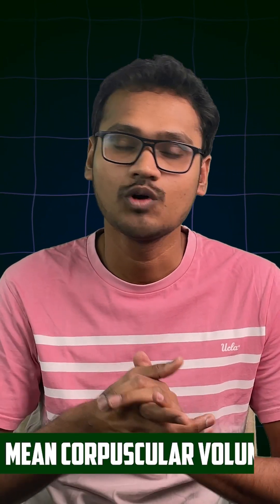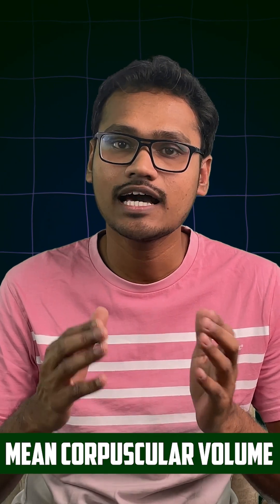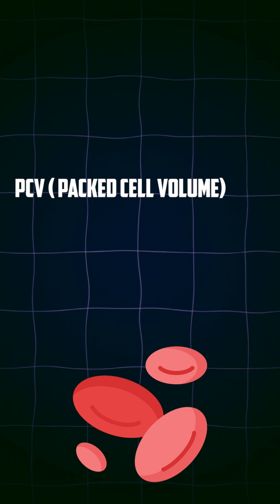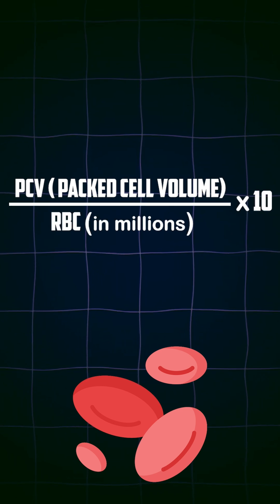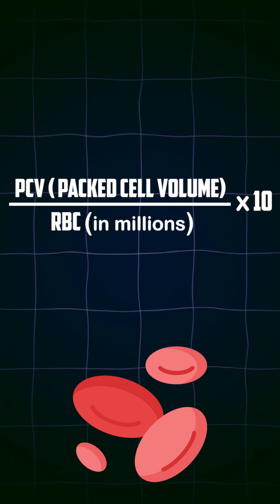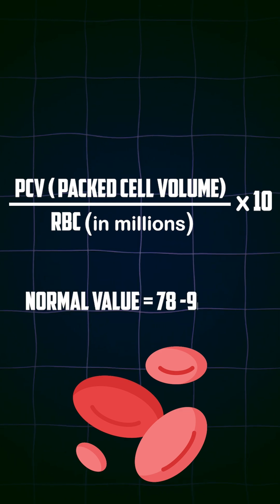Hello everyone. In this video we are going to understand what is Mean Corpuscular Volume (MCV). This is one of the important RBC indices which tells about the size of the RBC. The formula for MCV is PCV (Packed Cell Volume) divided by RBC in millions, multiplied by 10. The normal value is 78 to 92 micrometers cubed.